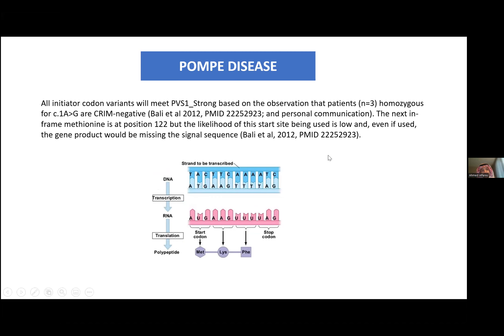These are very specific features that apply to Pompe disease. We know that any variant in the initiating codon is by default the first codon in the gene, and we always try to classify this variant as pathogenic, because this has been observed before. If there is a mutation in this first codon, the next initiation codon will be at position 122 instead of position 1. There will be a protein that is formed, but the likelihood is low, and even if another initiation codon starts, the gene product would still be missing an important signal sequence.